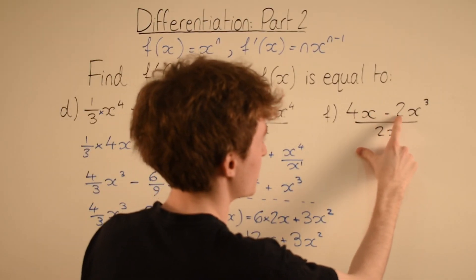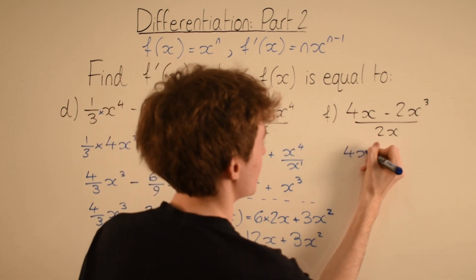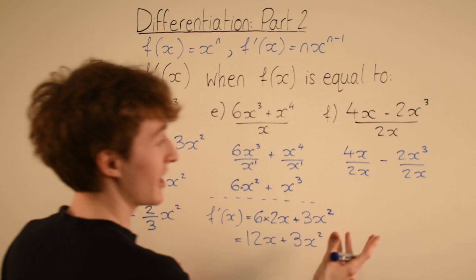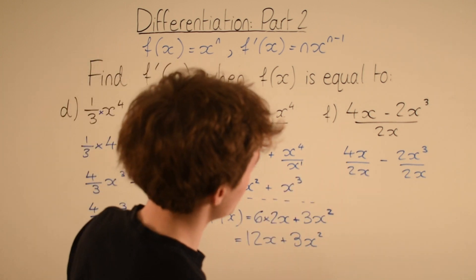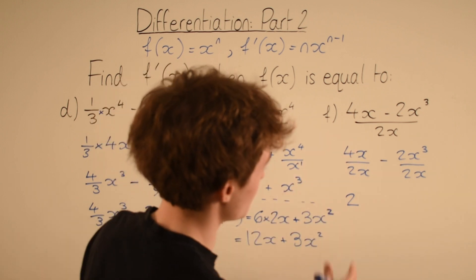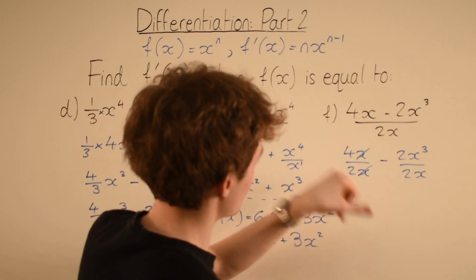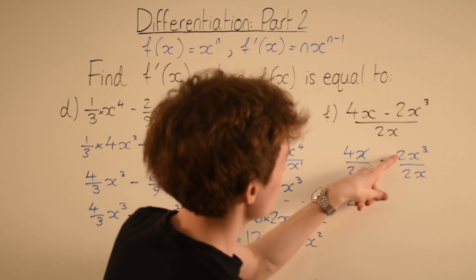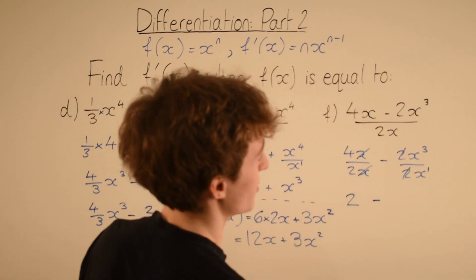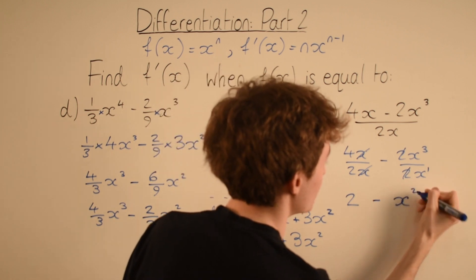Finally, differentiate (4x minus 2x cubed) over 2x. We split it into two fractions: 4x over 2x minus 2x cubed over 2x. Simplifying the first: 4 over 2 is 2, and x over x cancels, leaving just 2. For the second: the 2s cancel, and x cubed over x to the 1 means subtracting powers — 3 minus 1 is 2 — leaving x squared. So we now have 2 minus x squared.